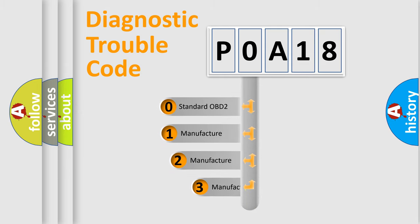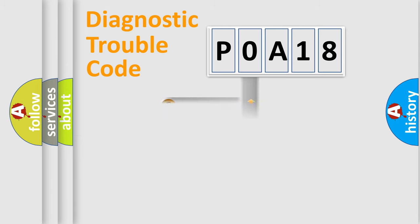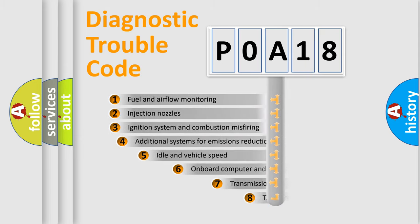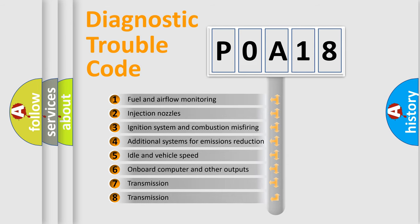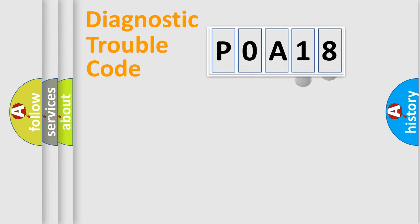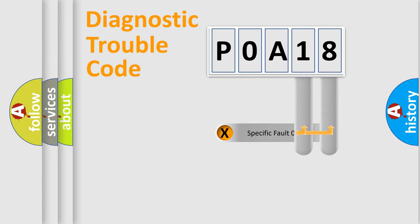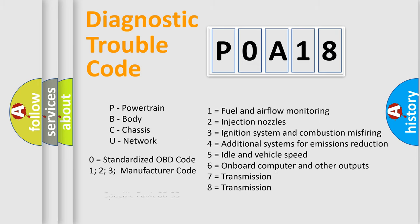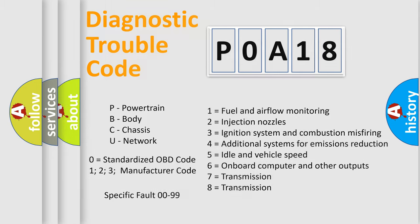If the second character is expressed as zero, it is a standardized error. In the case of numbers 1, 2, or 3, it is a more specific expression of a car manufacturer-specific error. The third character specifies a subset of errors. This distribution is valid only for the standardized DTC code, and only the last two characters define the specific fault of the group.